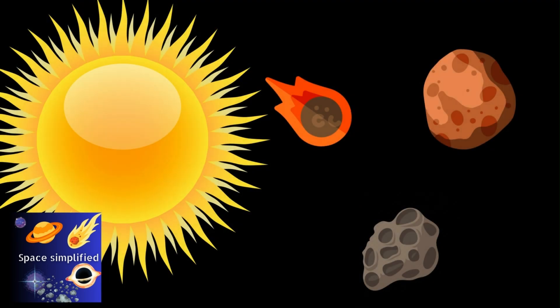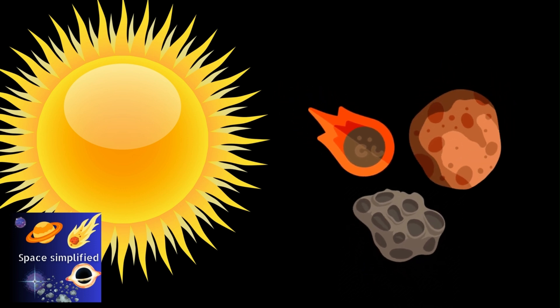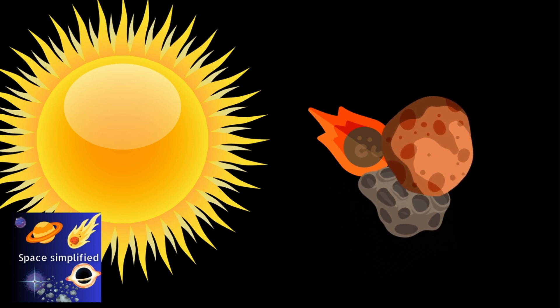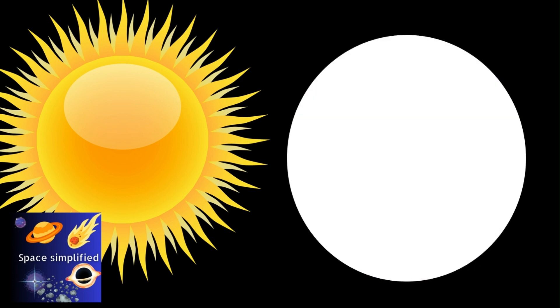According to the core accretion model, there exist dust, rocks, and gas around the protoplanet disc. These rocks then come together through gravity and collapse onto each other to form something known as planetesimals.